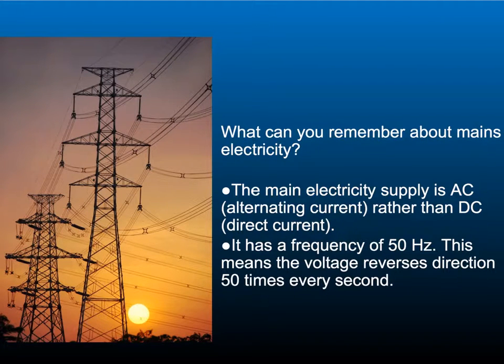We first met the dynamo effect when we did P2 and studied mains electricity. The mains electricity supply is AC (alternating current) rather than DC (direct current). It has a frequency of 50 Hz, which means the voltage reverses direction 50 times every second.